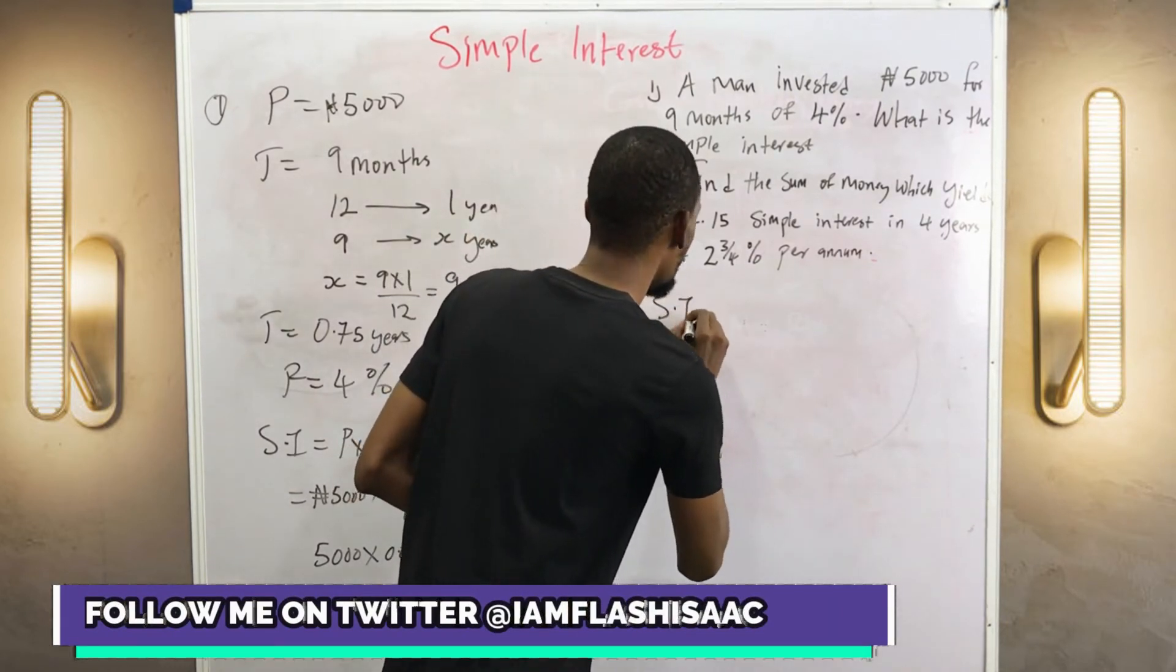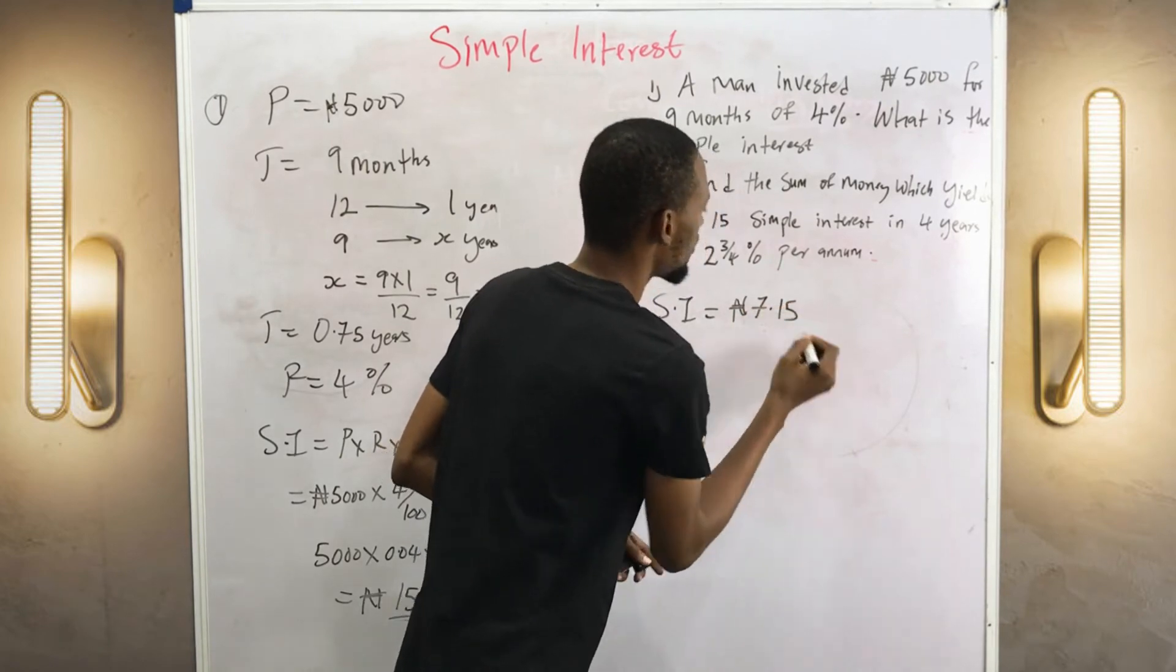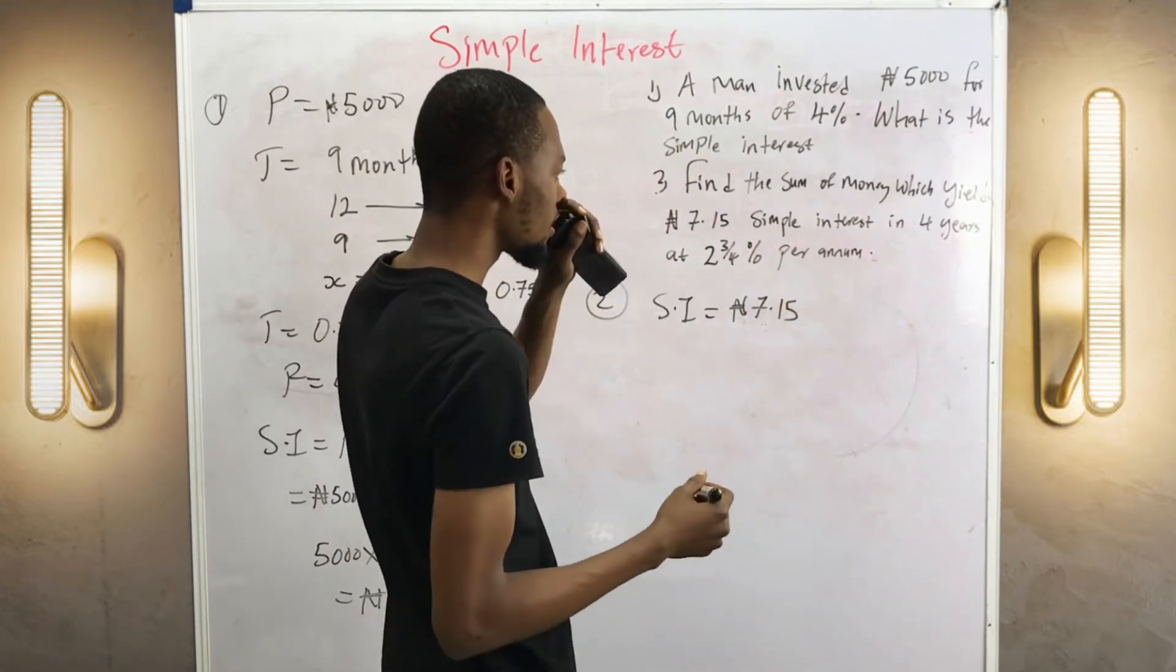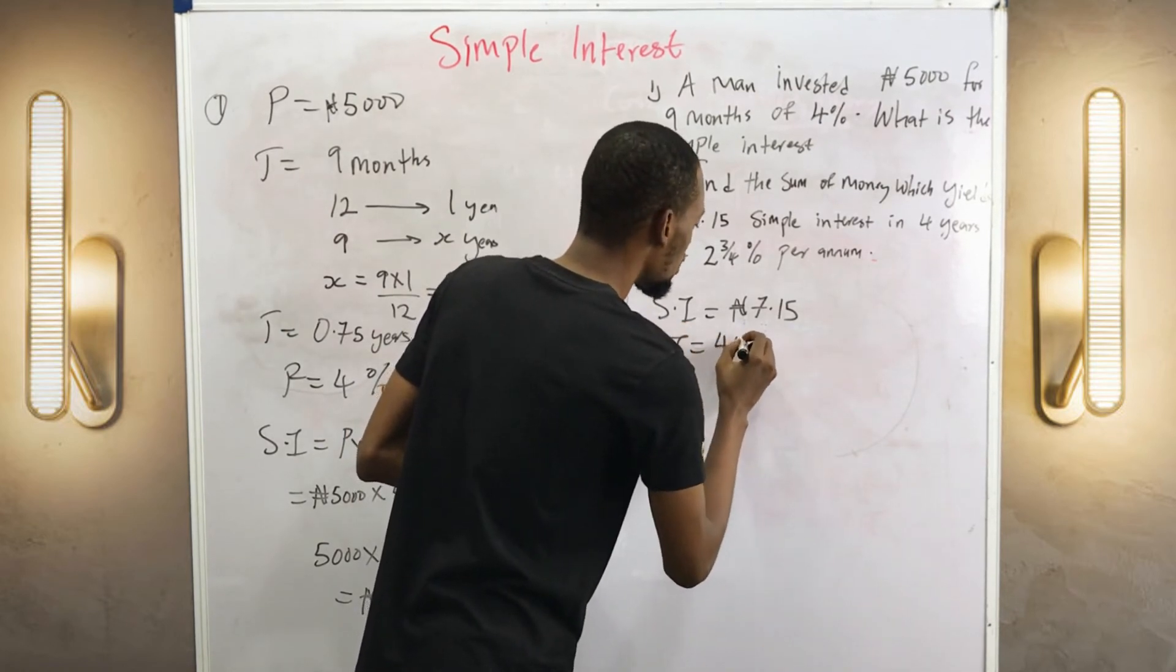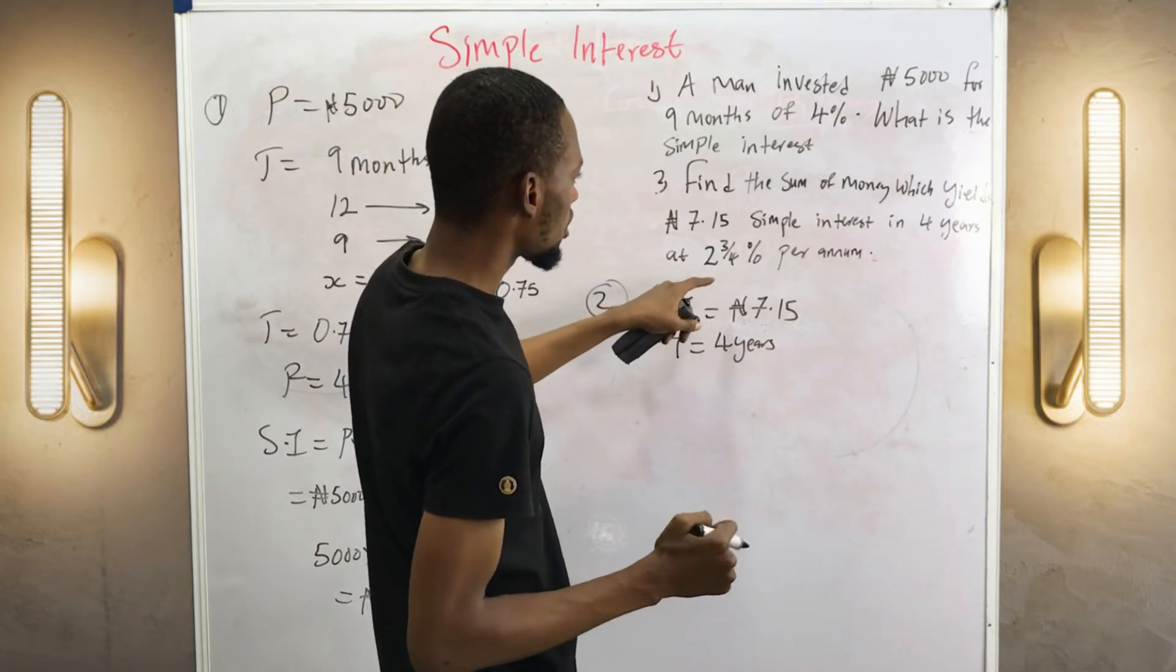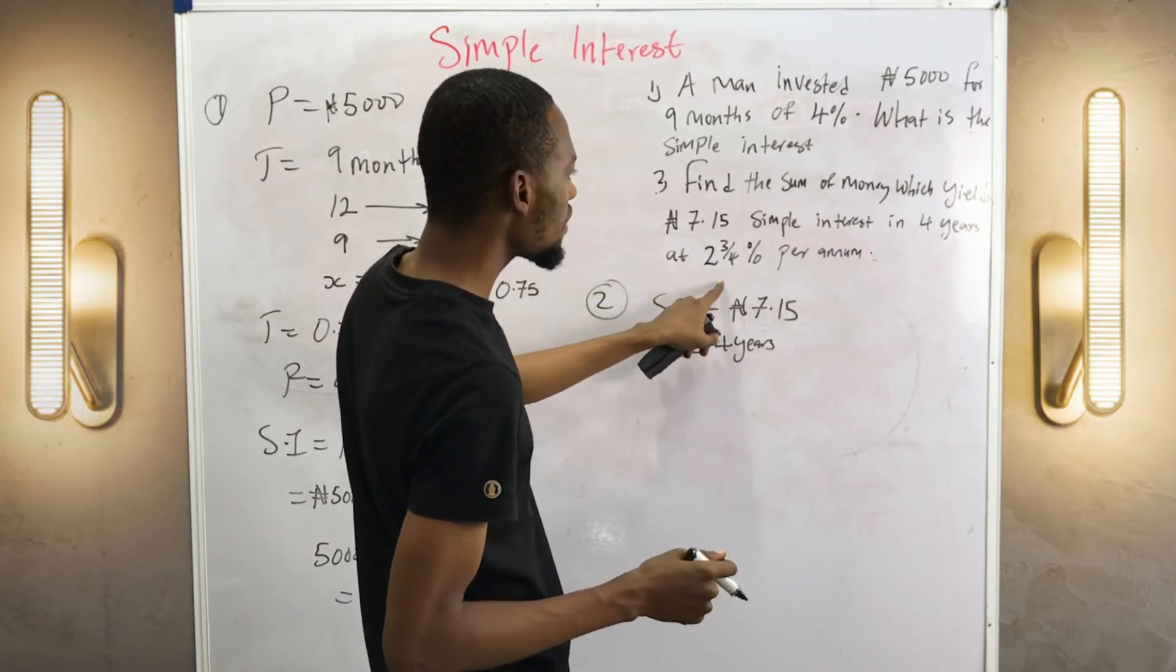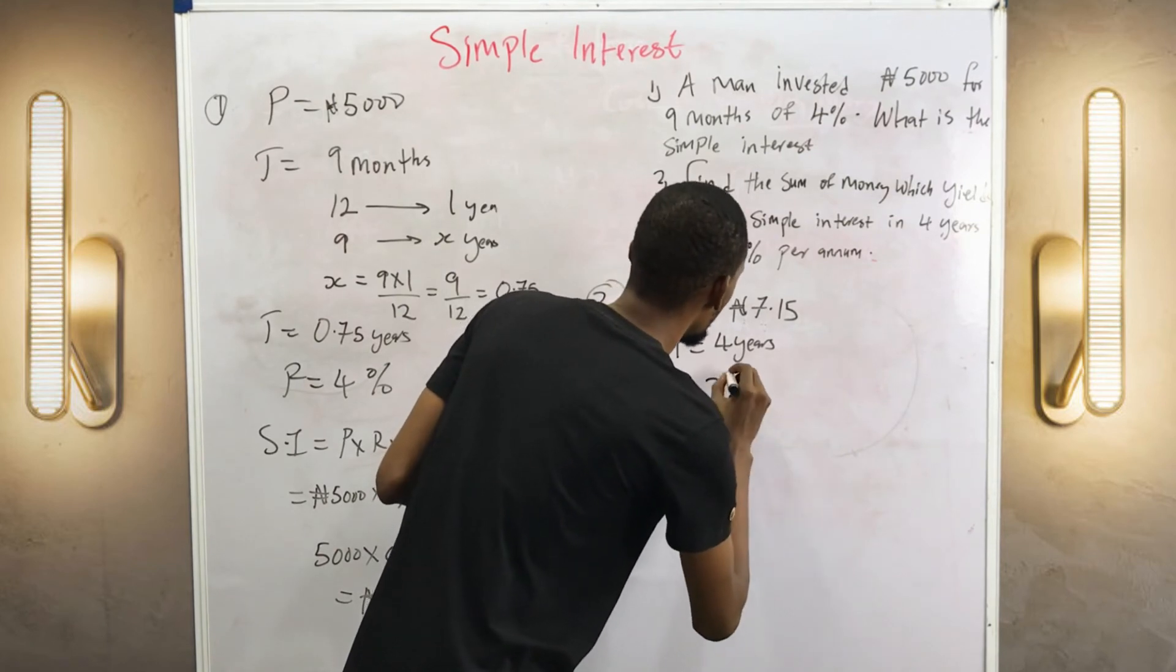The sum of money that yields simple interest, here equals 7.15. So they gave out the simple interest and they gave out the time. Time equals 4 years. They gave us the rate. Rate equals 2 and 3/4 percent.